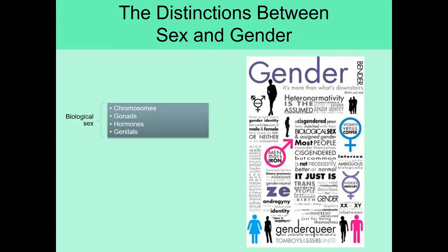Gender, on the other hand, is going to refer more to internalized self-awareness. It's going to include behaviors and how a person is treated in the environment. So gender is much more reactive to the environment and to upbringing and socialization, whereas biological sex is much more consistent across a person's lifespan, though hormones are one case where they can fluctuate. We'll start by talking about biological sex and then later turn our attention to gender.